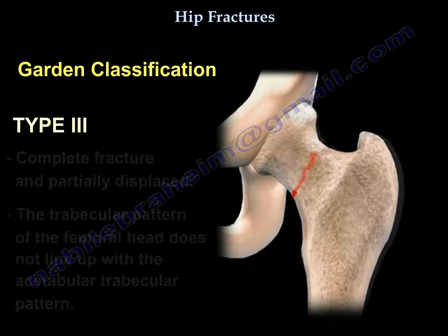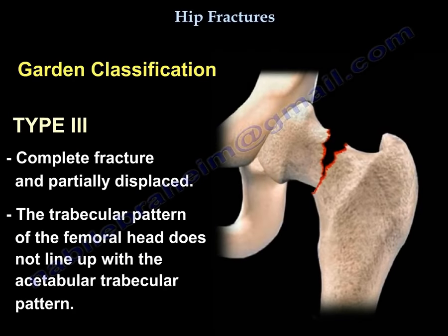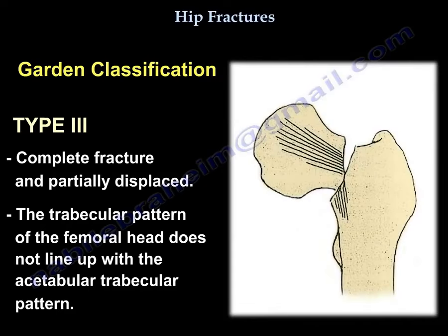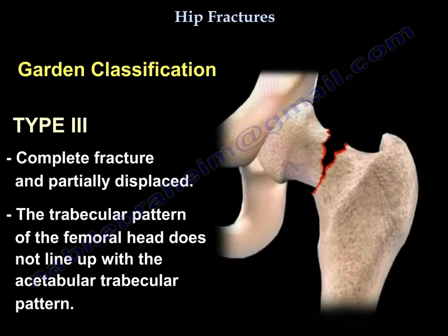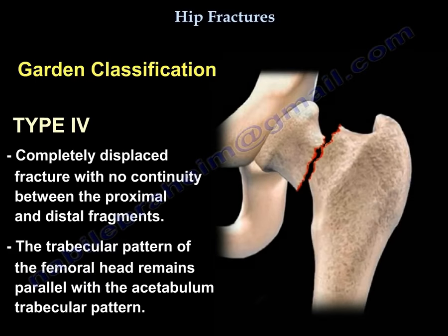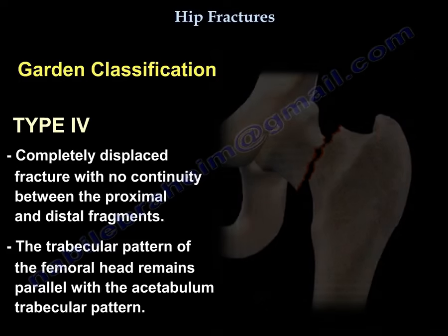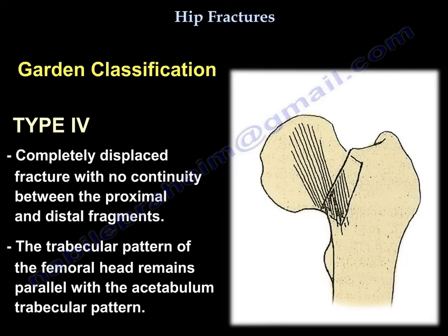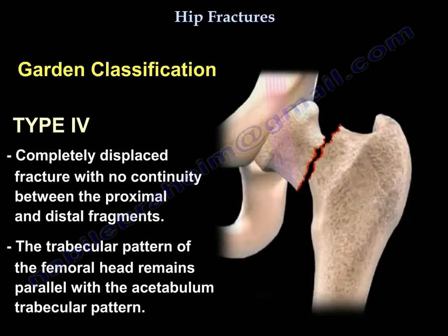Type 3 is a complete and partially displaced fracture. The trabecular pattern of the femoral head does not line up with the acetabular trabecular pattern. In type 4, the fracture is completely displaced with no continuity between the proximal and distal fragments, and the trabecular pattern of the femoral head remains parallel with the acetabular trabecular pattern.